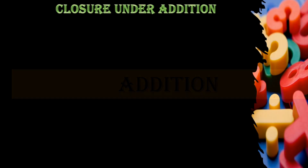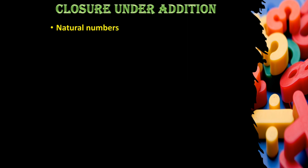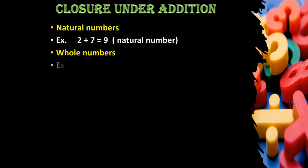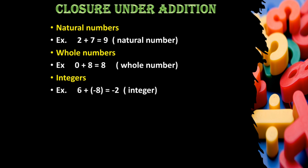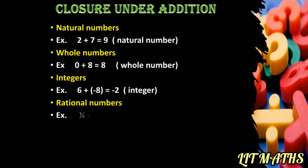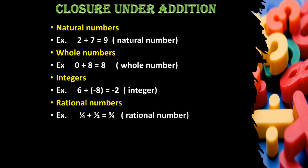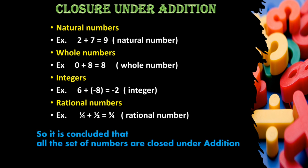Let's discuss closure under addition. For natural numbers, whenever we add any two natural numbers, we always get a natural number as the sum. For whole numbers, when two whole numbers are added, we always get a whole number. When two integers are added, we always get an integer. When two rational numbers are added, we always get a rational number. So it is concluded that all sets of numbers — natural numbers, whole numbers, integers, and rational numbers — are closed under addition.